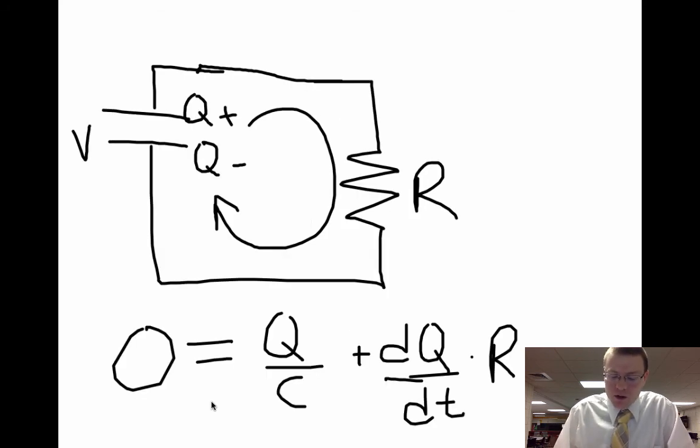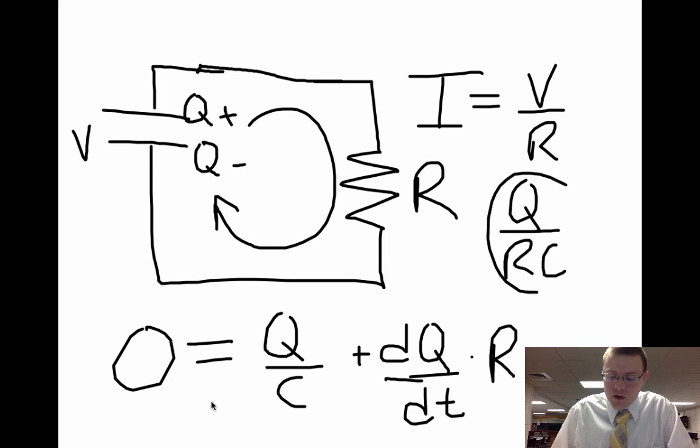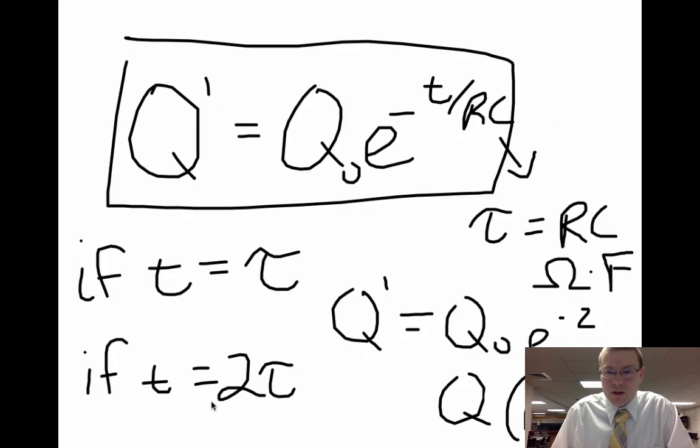And the voltage was Q over C. So this was our original current, and now looking at our equation, we have our maximum current.